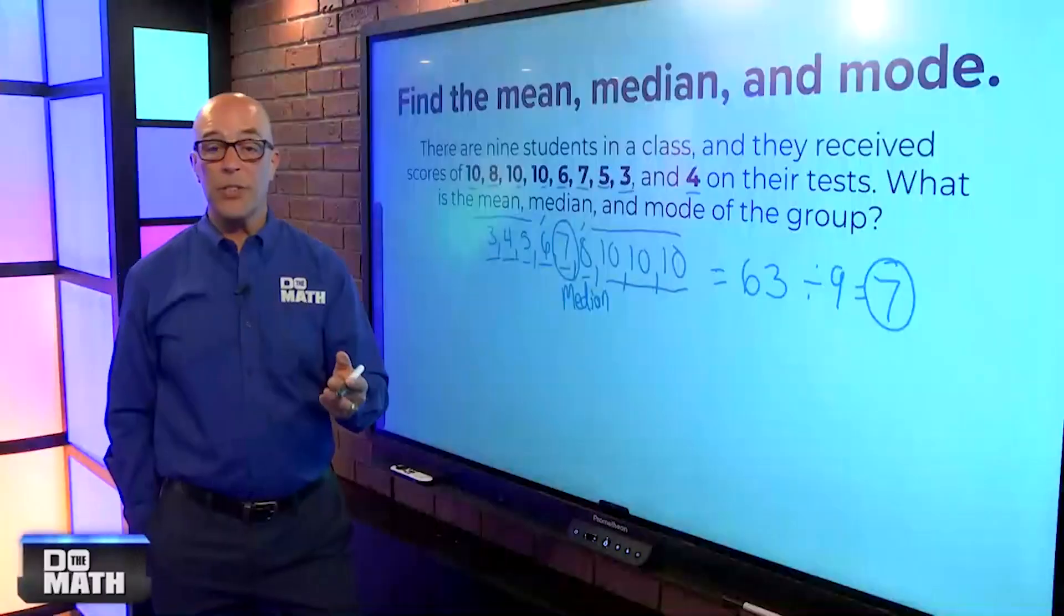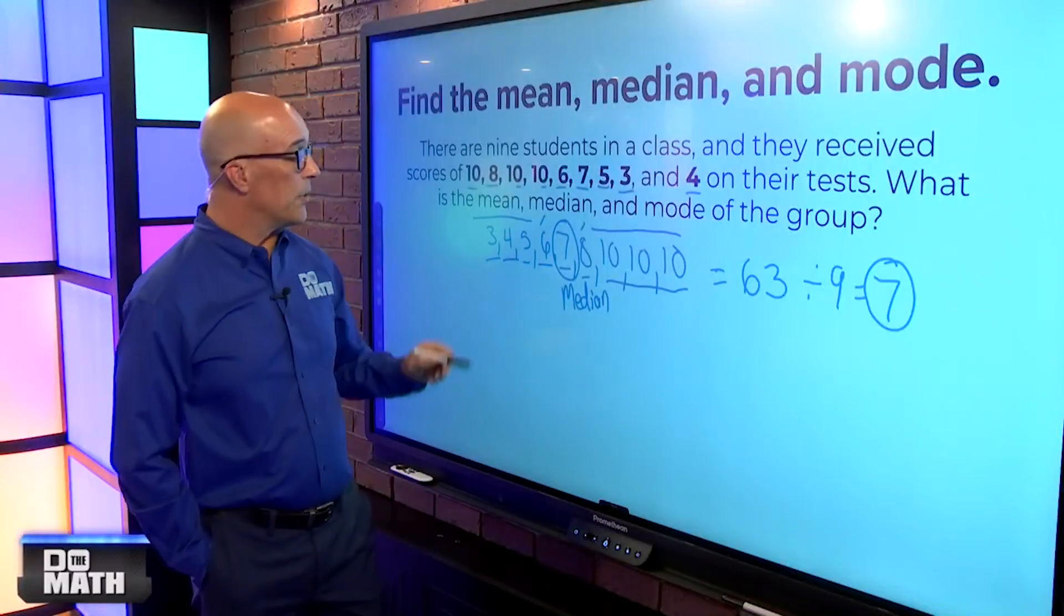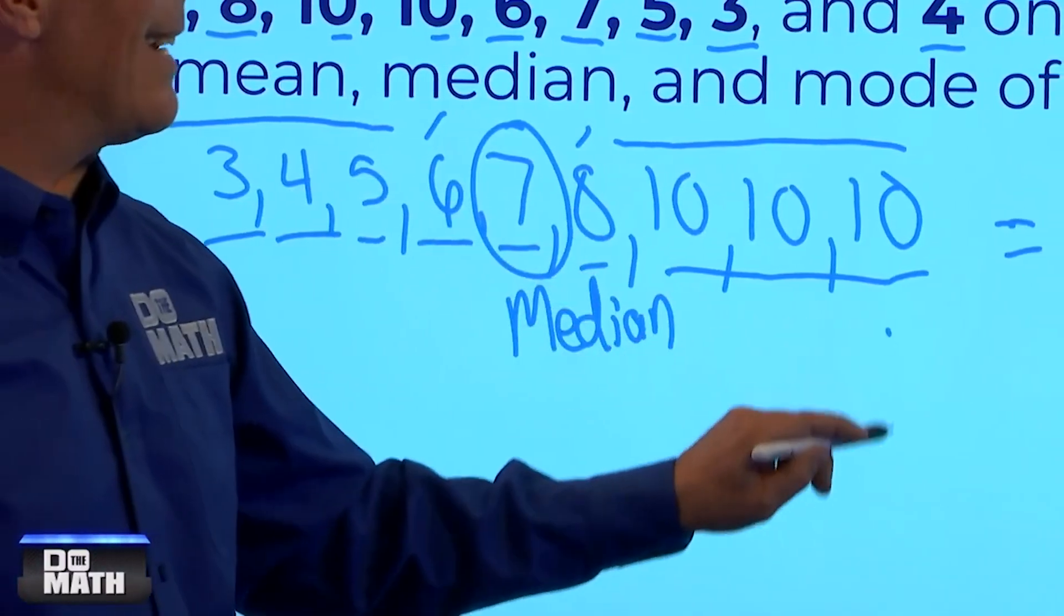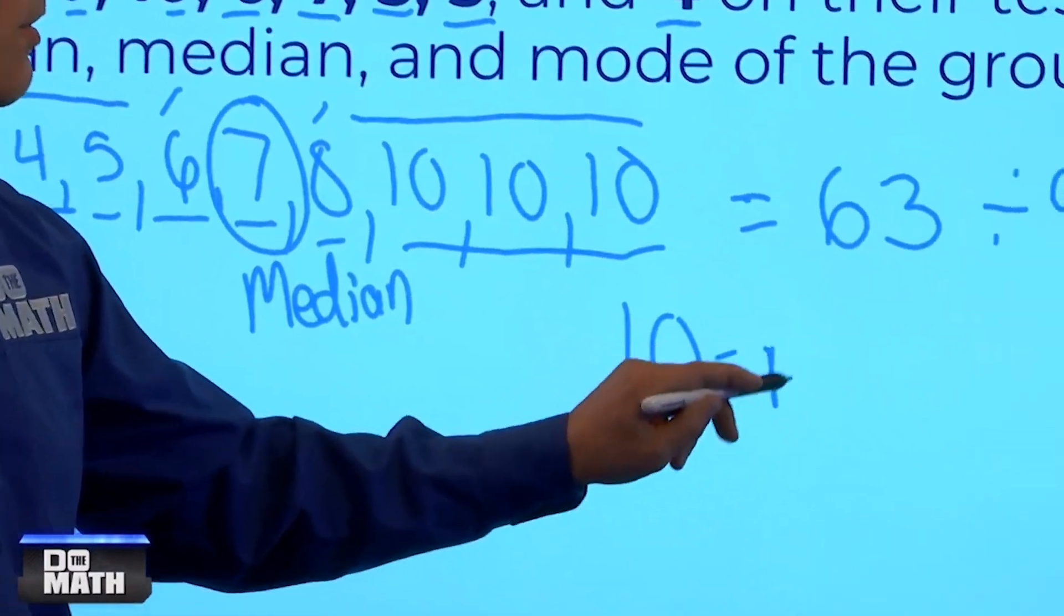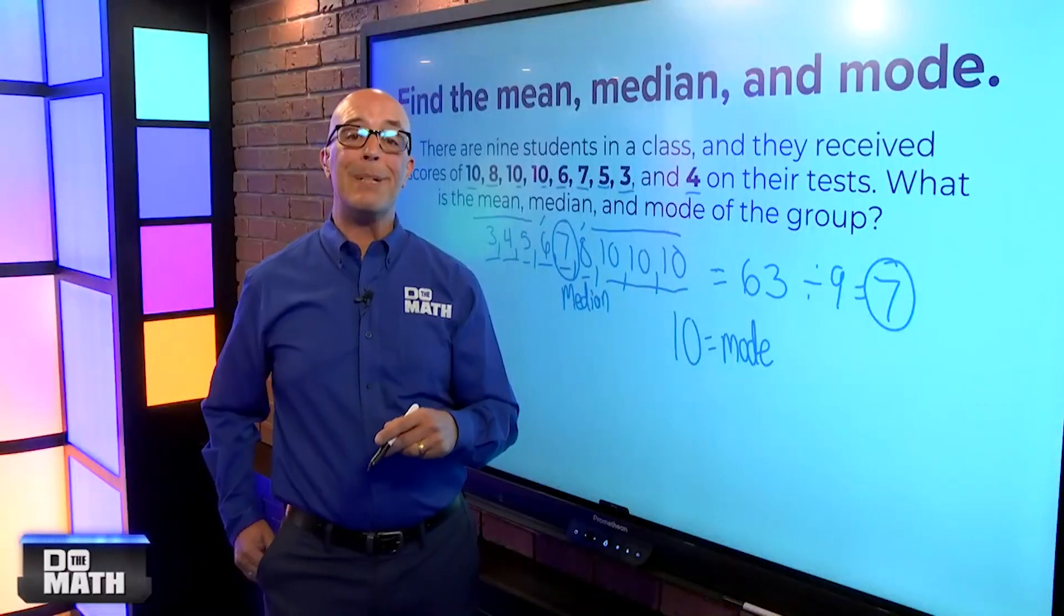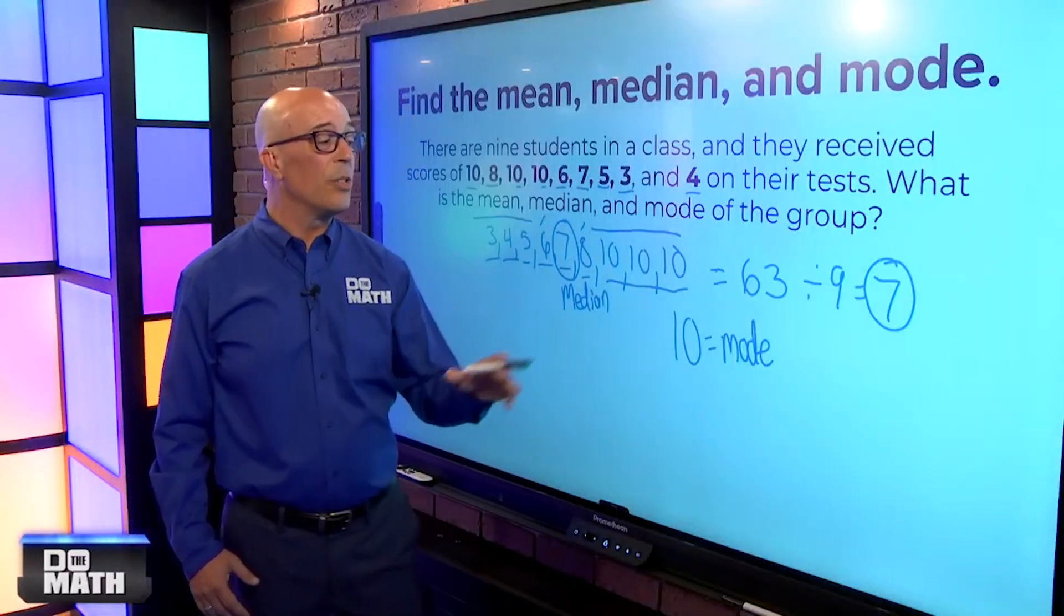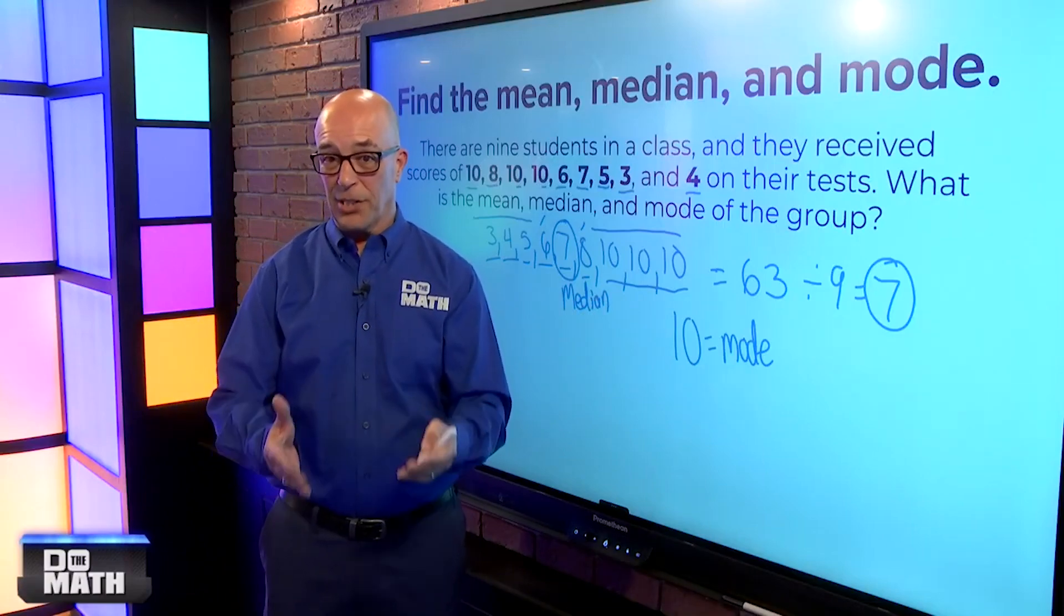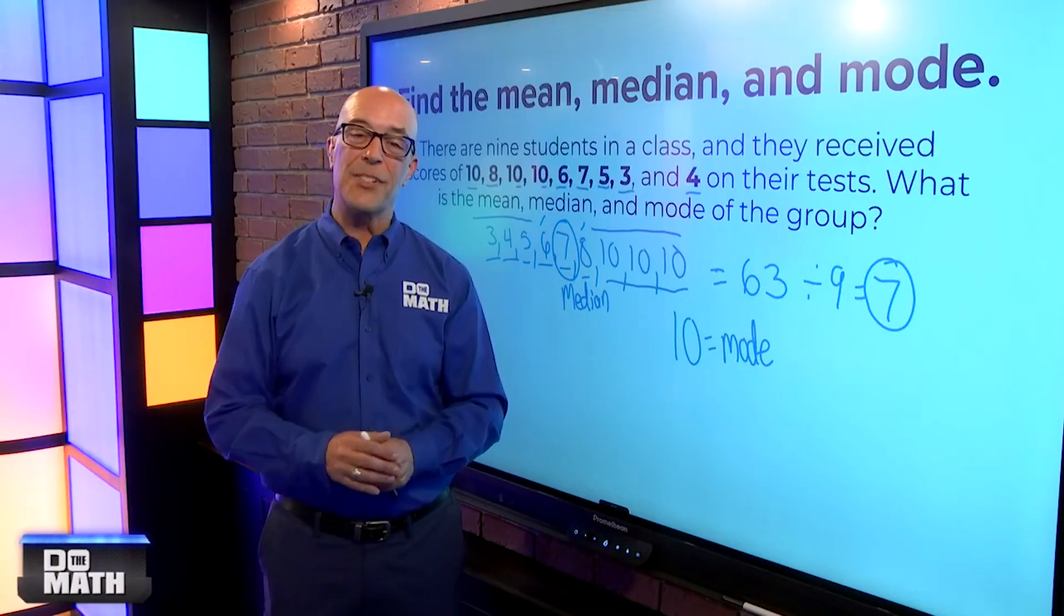Now, the mode, once again, most often. So, we can see this is once, once, once, once, once, once, three of them. So, 10 is going to be the mode. So, there we go. That is the mean, median, and mode. So, just a little something to get you ready for when you get into a higher level math class, such as statistics. That is today's Math in the News.